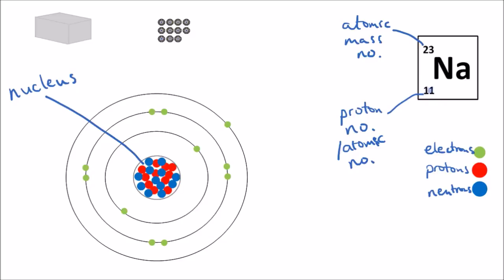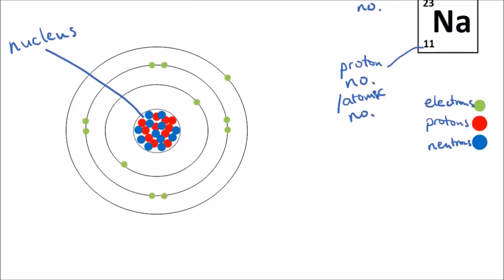If we have 11 protons, then we must also have 11 electrons. Counting them, that's 11 electrons. The arrangement of the electrons will be covered in part 2, so we don't need to worry just yet. We can do this for any element.